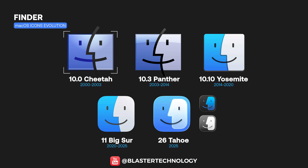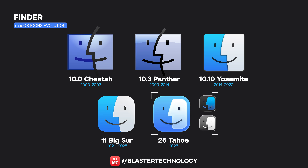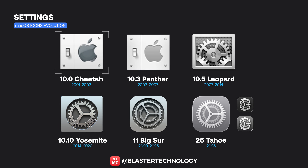The Finder icon in macOS 10.0 adopted the aqua style with volume and reflections. It was later unified and flattened in OS X Yosemite, then radically redesigned in Big Sur by merging the two faces into a more friendly and coherent iconography, further refined up to the modern version found in macOS 26.